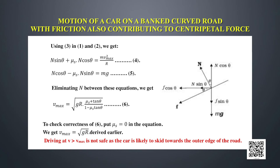This equation gives the maximum safe speed. To verify its correctness, setting μ_s = 0 (eliminating friction) reduces it to v_max = √(R·g·tanθ), the relation derived earlier without friction. Driving at speeds exceeding v_max is not safe, as the car is likely to skid towards the outer edge of the road and may overturn.